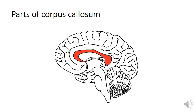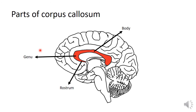Coming to the parts of corpus callosum — this one here marked in red is the corpus callosum and it is divided into four parts: the rostrum, the genu, the body, and the splenium.